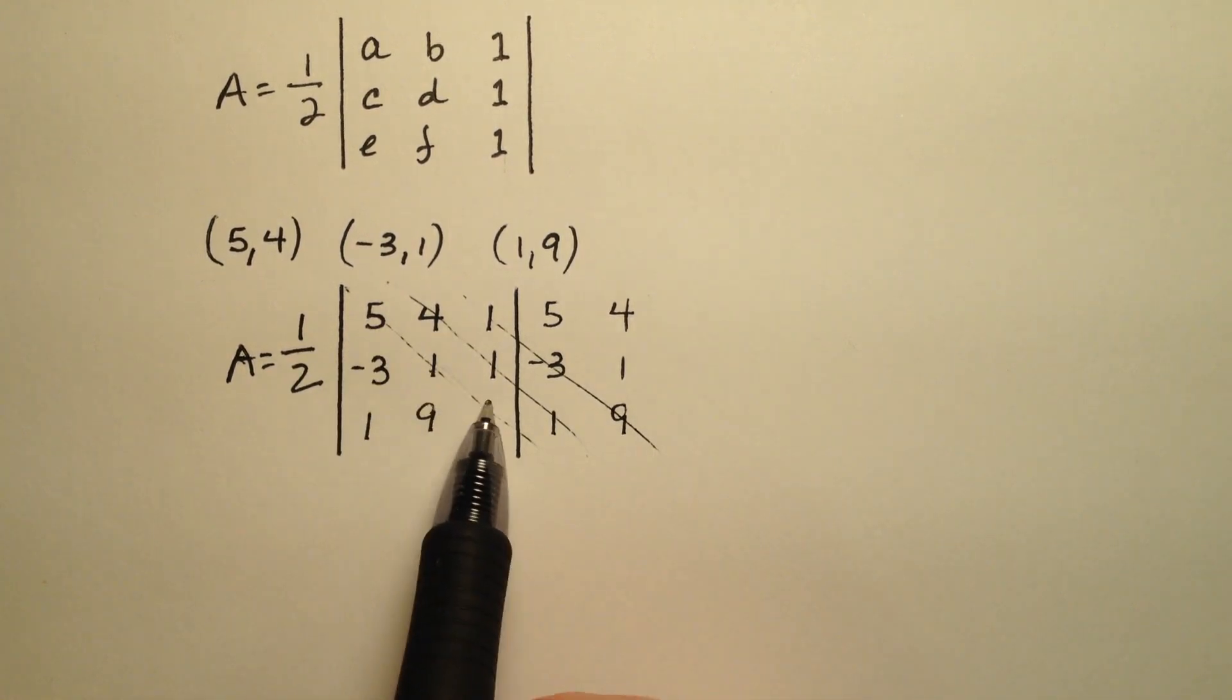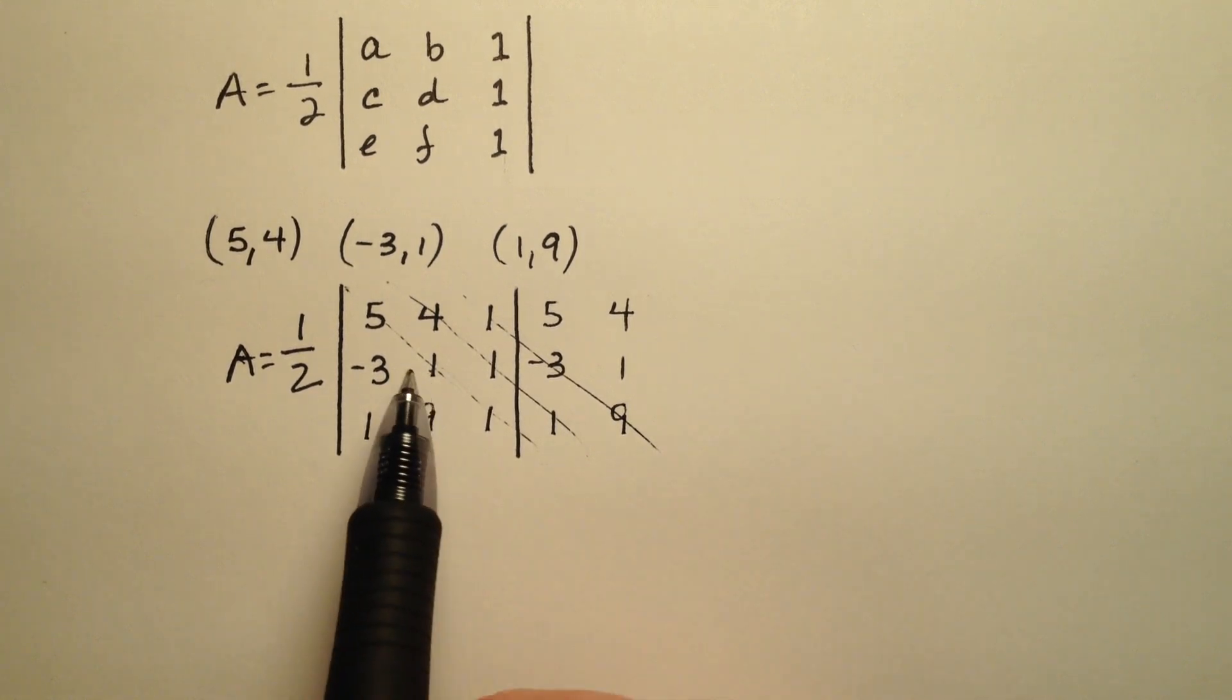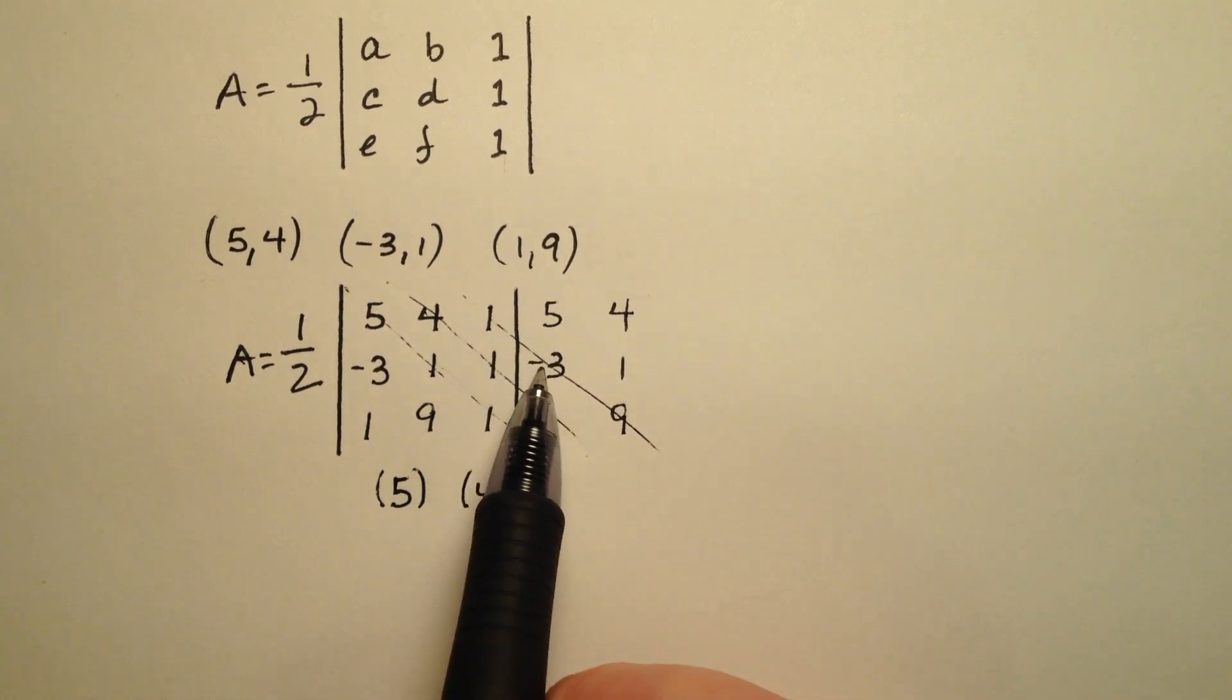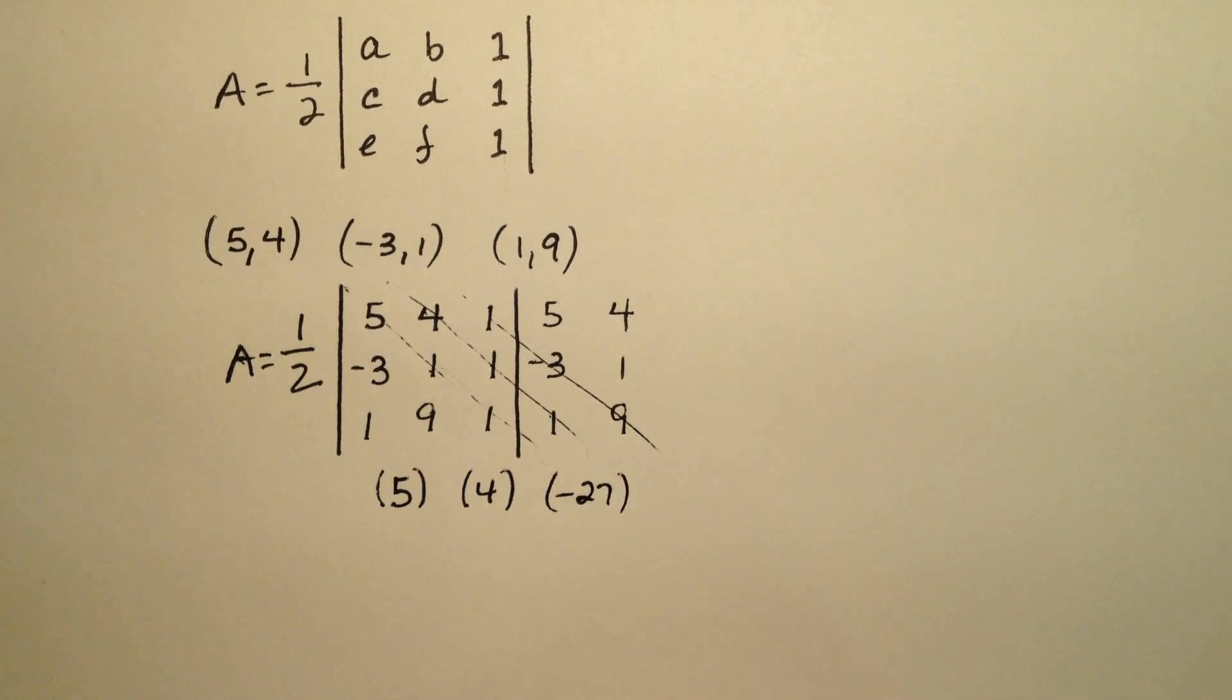So 5 times 1 times 1, that's going to be 5. And 4 times 1 times 1, that's going to be 4. And then 1 times -3 times 9 is going to be -27. And all of these are positive.